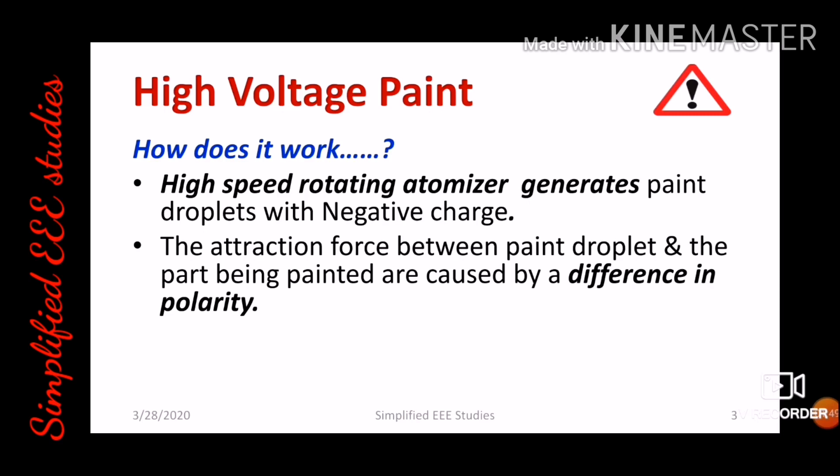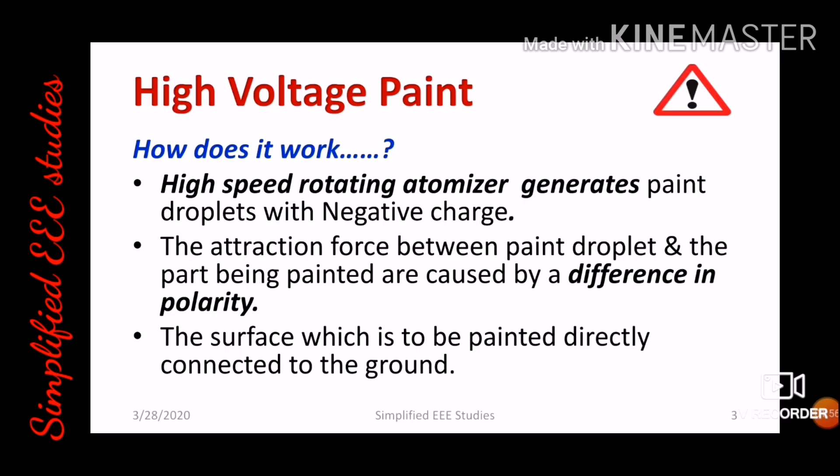The negatively charged paint particle will be directly attracted towards the surface where we need to perform the painting. The surface which is to be painted is directly connected to the ground, so that it has a positive charge. The paint droplet has a negative charge, so the electrostatic attraction principle can be directly applied here.